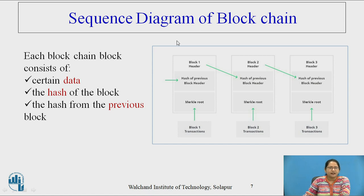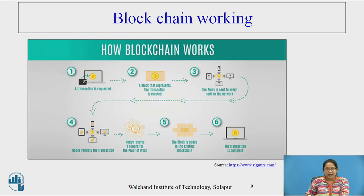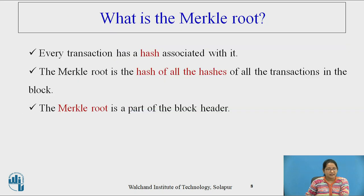This is a sequence diagram of a blockchain in detail. Each blockchain block consists of certain data, the hash of the block, and the hash from the previous block. There is also the Merkle root. Every transaction has a hash associated with it. The Merkle root is the hash of all the hashes of all the transactions in the block. The Merkle root is part of the block header, as seen in the previous diagram. It is also known as a hash tree, which is a data structure used in a cryptographic manner.